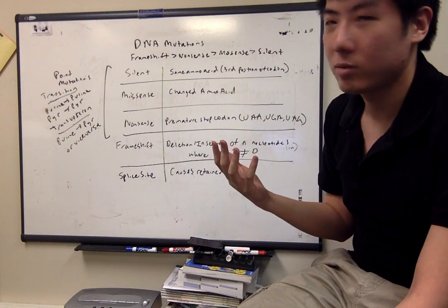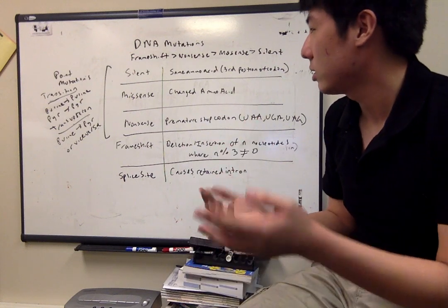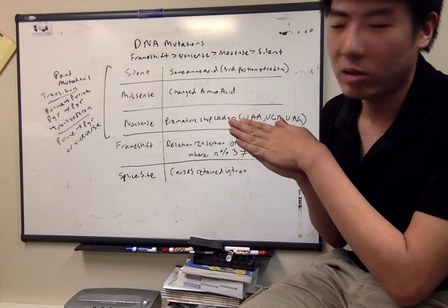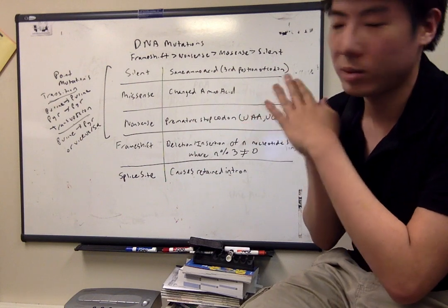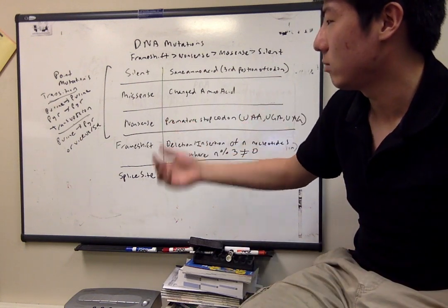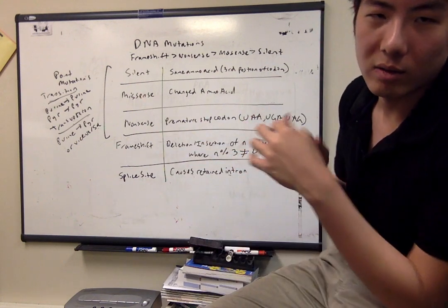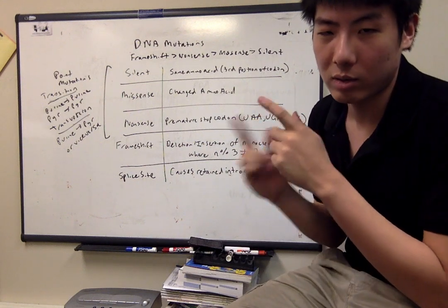Just a little bit of vocab in case you get asked about this: a transition point mutation converts a purine to a purine or a pyrimidine to a pyrimidine, whereas a transversion converts a purine to a pyrimidine or vice versa.